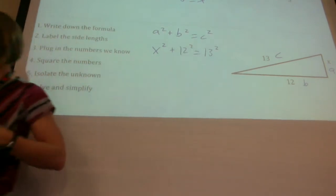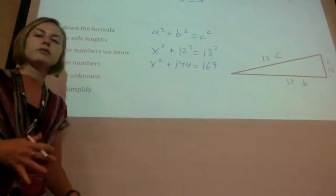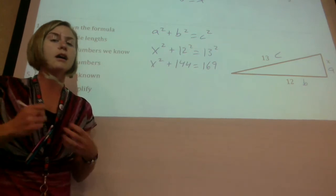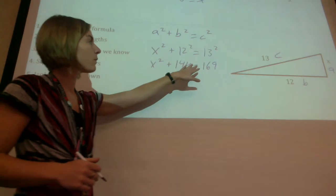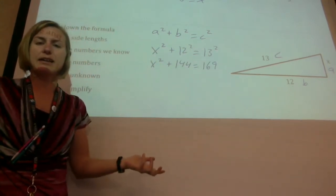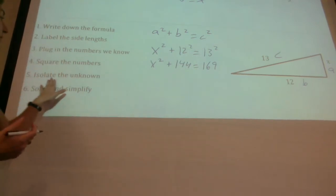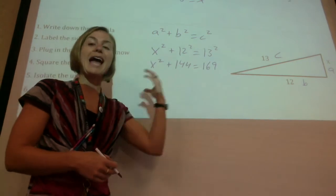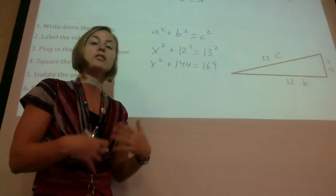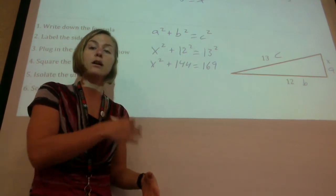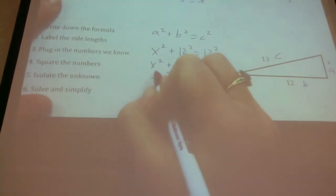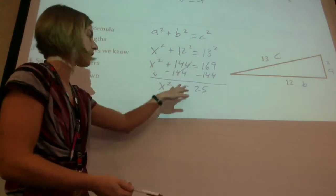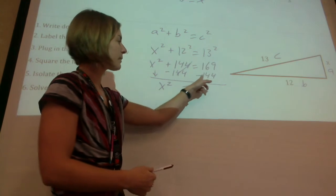Now we need to do step four: square the numbers. If you're a little rusty on your squares, that's one of the reasons I gave you the multiplication chart for your notebook, because it has the squares highlighted. Or you could always use your calculator. So 12 squared is 144, and 13 squared is 169. Step five: isolate the unknown. We need X squared by itself, but we have 144 being added to it, so we subtract 144 from both sides. 169 minus 144 is 25.